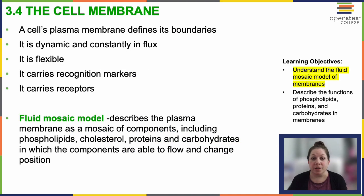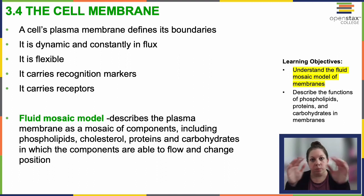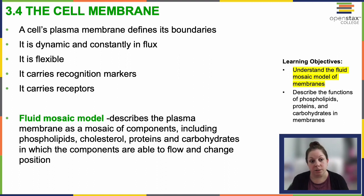The cell's plasma membrane defines its boundaries. It's dynamic, constantly in flux, it is flexible — at least if we're talking about animal cells. Plant cells have that cell wall that creates a rigid structure. It carries recognition markers — ways for the cell to identify other cells that are self versus non-self, or what type of cell they are. There's a whole huge range of them.